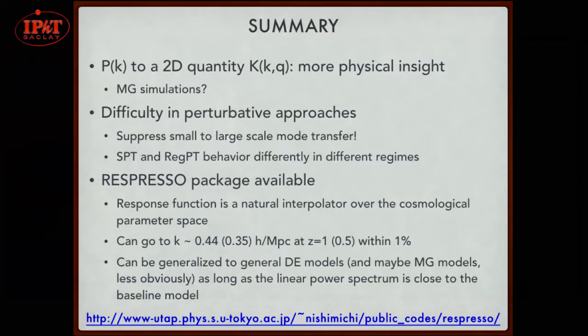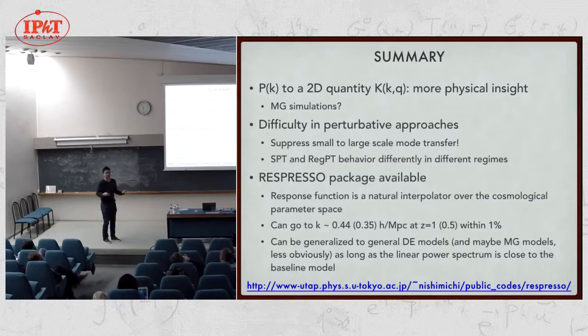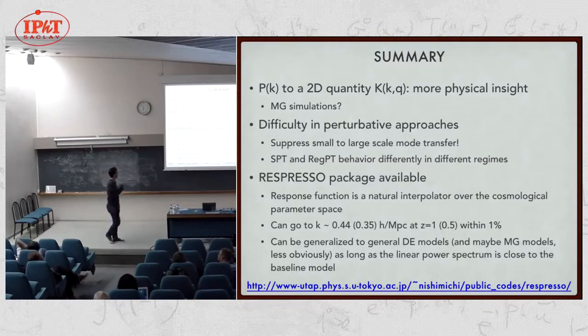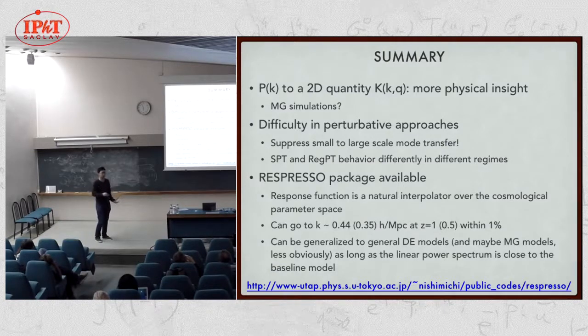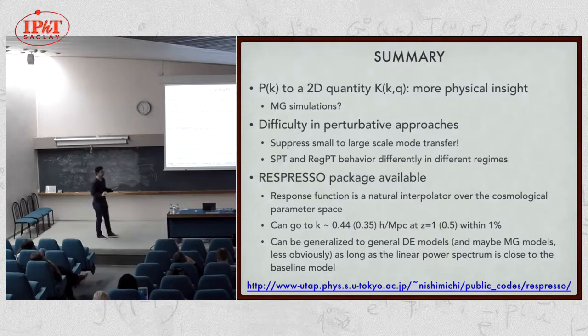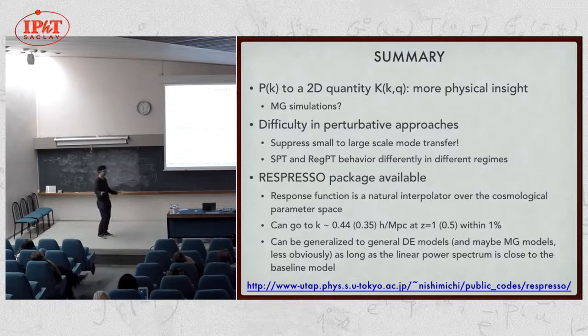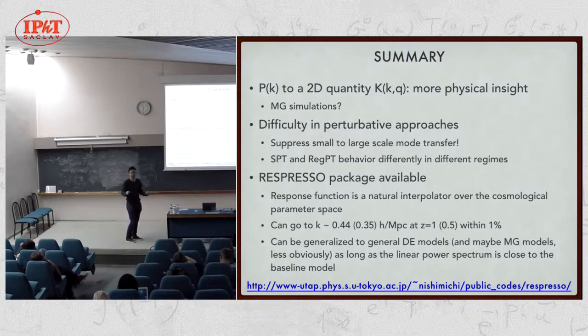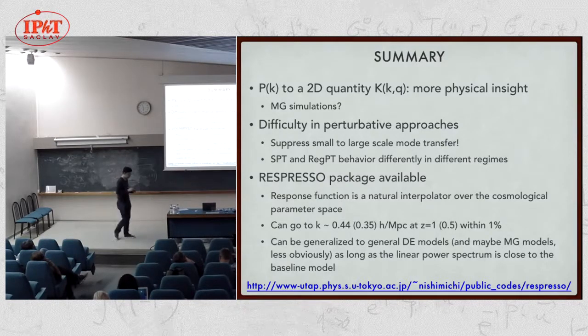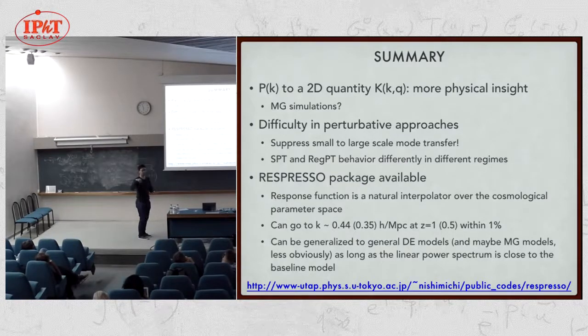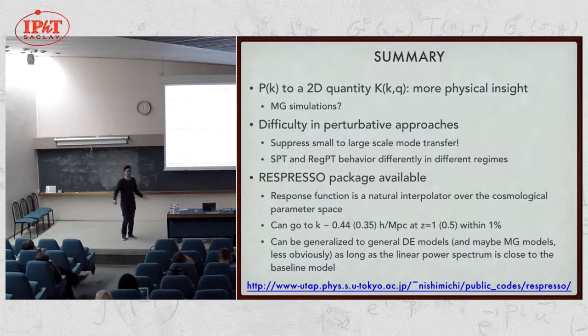To sum up, we generalize the discussion from one dimensional thing, P of K, to two dimensional things, R of K and Q, to gain more physical insight, what's going on on the transition scale. Then, we developed a phenomenological model to make a prediction of this quantity, using that package is available to compute nonlinear power spectrum, given linear power spectrum. Although this is developed within the Lambda-CDM framework, I believe it works for at least dark energy models with different equation of state parameters, as long as gravity is the same. And also, maybe some modified gravity model, maybe if you give it a linear prediction, it can give you a correct nonlinear power spectrum. But clearly, the response function describes your gravity. So if you have a very different gravity theory, our prescription for the R function might be wrong. This is still to be tested. Thank you for your attention.